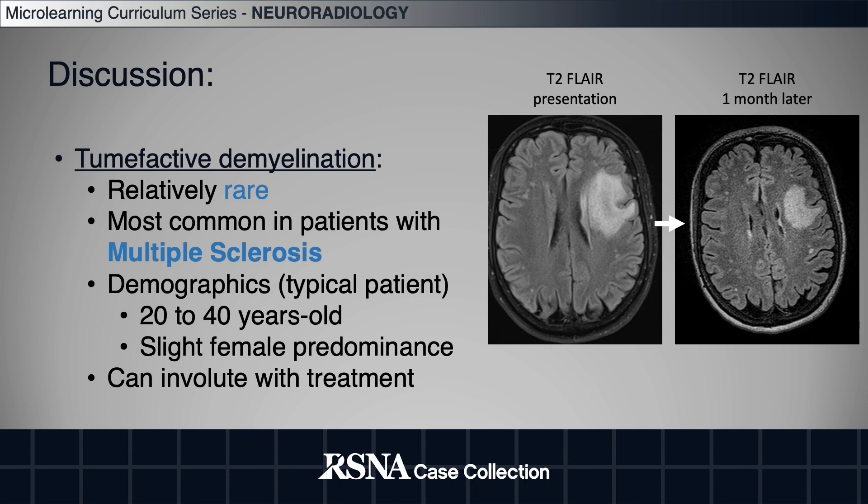Tumefactive Demyelination is relatively rare. It is most commonly seen in patients with multiple sclerosis in individuals who are between 20 and 40 years old, with a slight female predominance. Fortunately, lesions can involute with treatment.